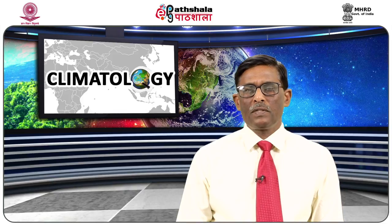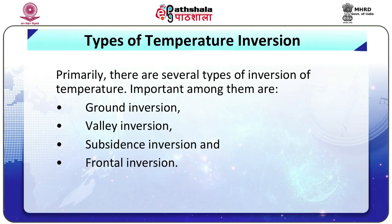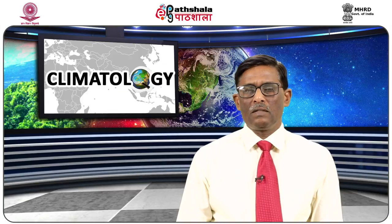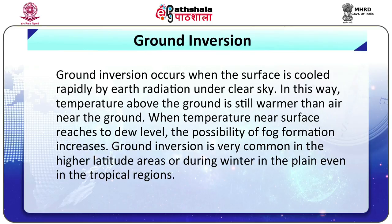Coming to the types of temperature inversion: important among them are ground inversion, valley inversion, subsidence inversion, and frontal inversion. Ground inversion occurs when the surface is cooled rapidly by earth radiation under clear sky. In this way, temperature above the ground is still warmer than the air near the ground. When temperature near the surface reaches the dew level, the possibility of fog formation increases. Ground inversion is very common in higher latitude areas or during winter in the plains, even in tropical regions.